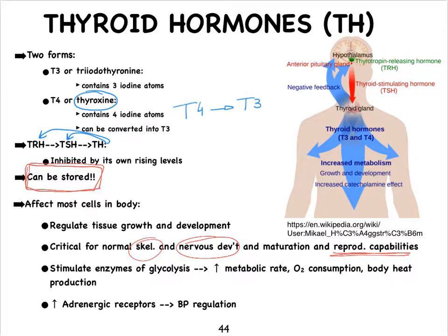Thyroid hormones very much influence our metabolic rate. They do that by stimulating enzymes of glycolysis, allowing for more ATP to be formed, more oxygen to be consumed, and it results in more production of heat. People who are low in thyroid hormones are often cold because they cannot generate enough heat.